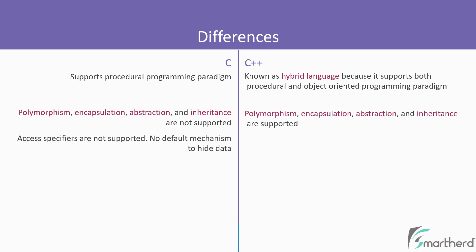There are no access specifiers in C. Therefore, there is no proper mechanism to hide data. But in C++, due to the availability of access specifiers, we can easily decide what to hide and what to expose to the outside world.